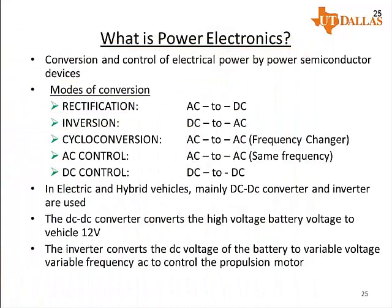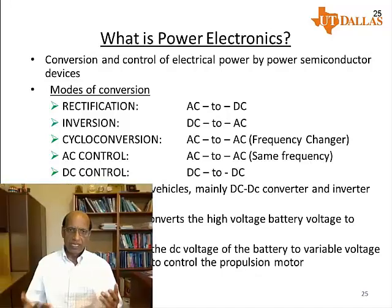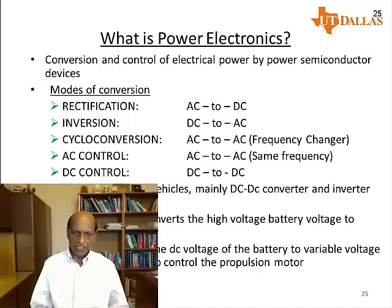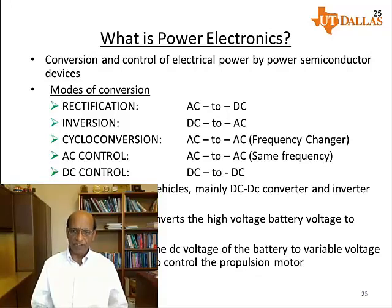So what is power electronics? It is the conversion and control of electric power using power semiconductor devices. Power electronics can be used in different modes. It can be rectification, that is conversion of AC to DC, or inversion, that is conversion of DC to AC of variable frequency and variable voltage.